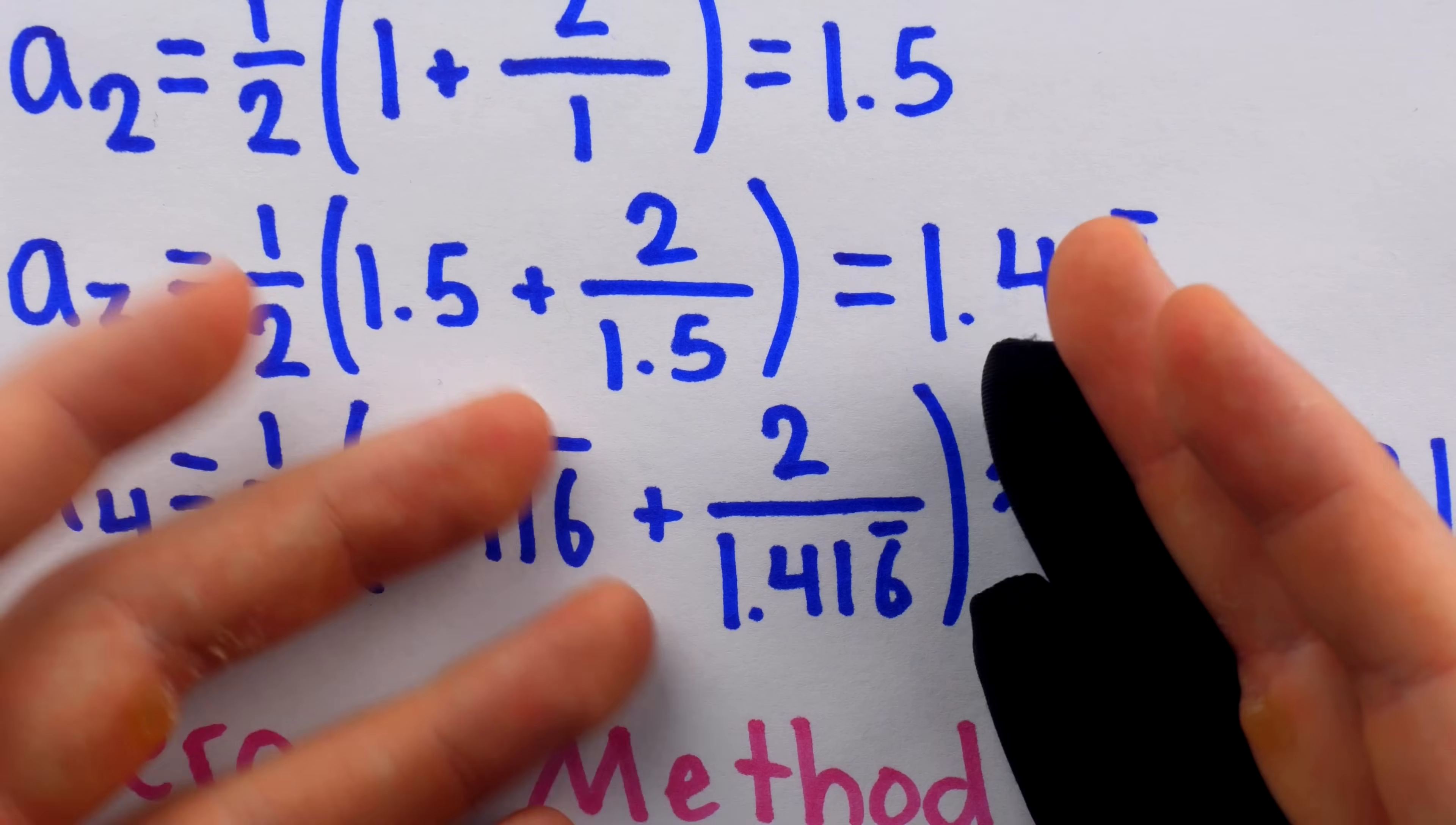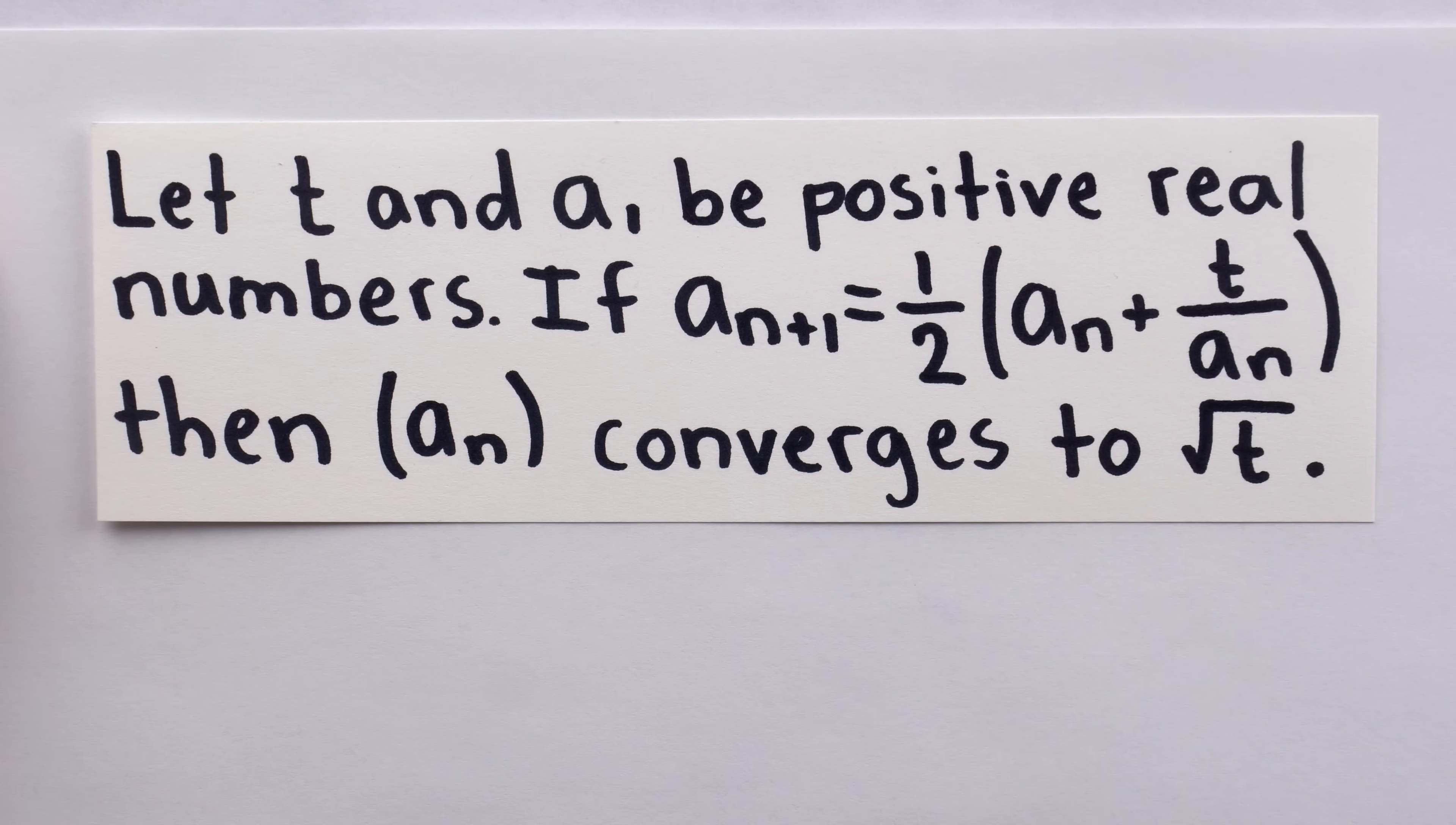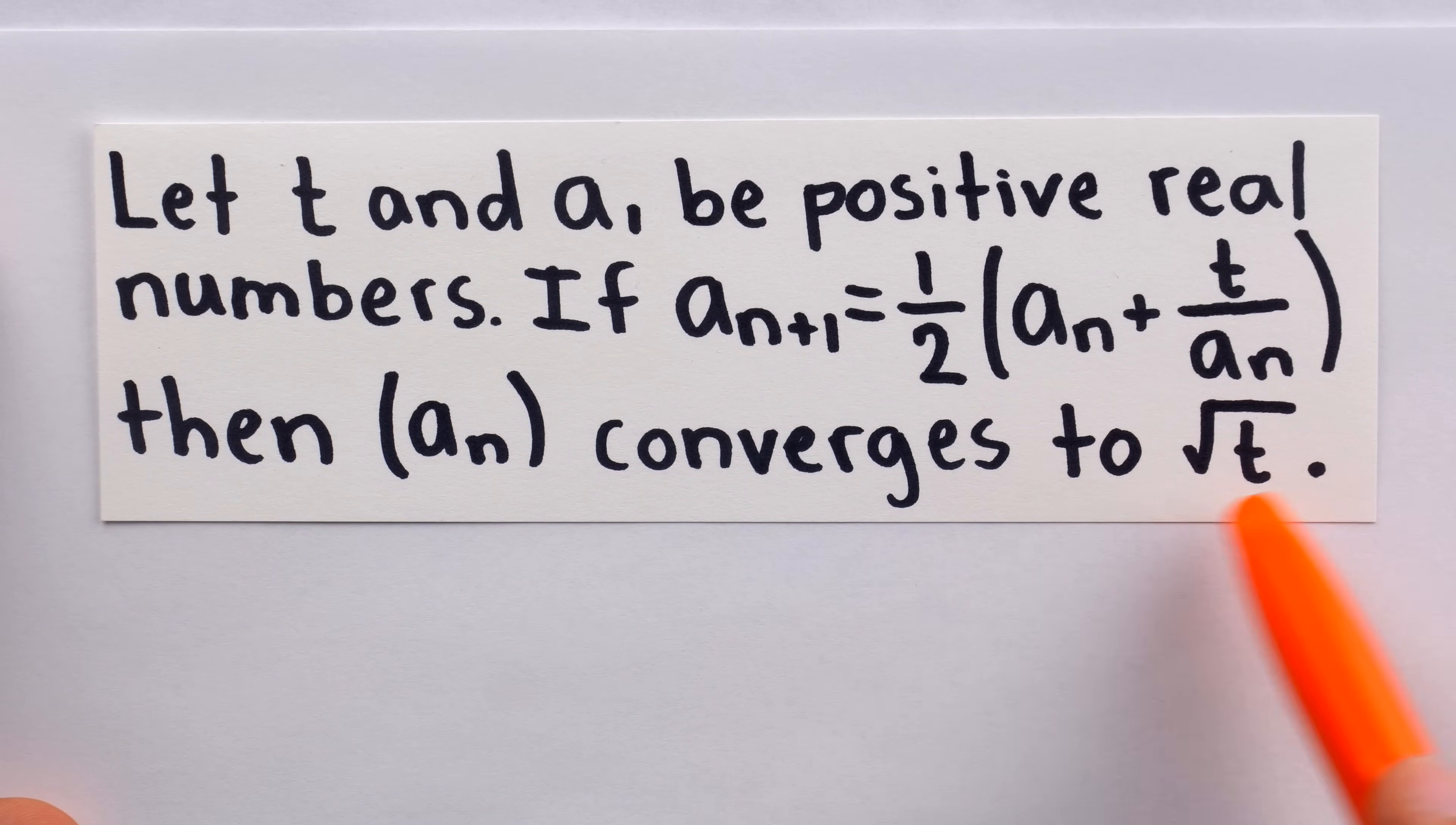Well, I suppose we should prove it. So, here's the validity of Herron's method that we're going to prove. Let t and a1 be positive real numbers. t is the number whose square root we're trying to approximate, and a1 would be our initial guess. If an plus 1 is equal to this, so we're using Herron's method to construct this sequence, then the sequence is going to converge to the square root of t.